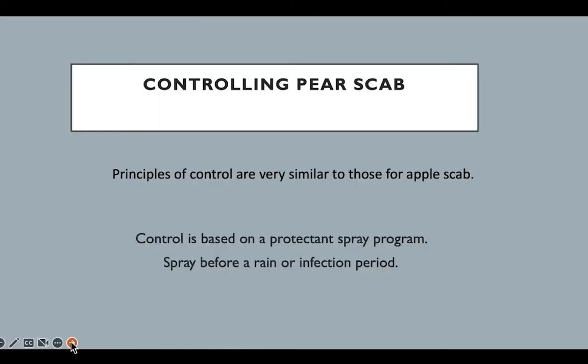The principles of control for pear scab are very similar to apple scab. Control is based on protectant spray programs — spray before the rain or before an infection period. The problem starts when we can't always spray before the rain, and there are other issues like not being able to drive in the orchard, which causes more problems in wet years.